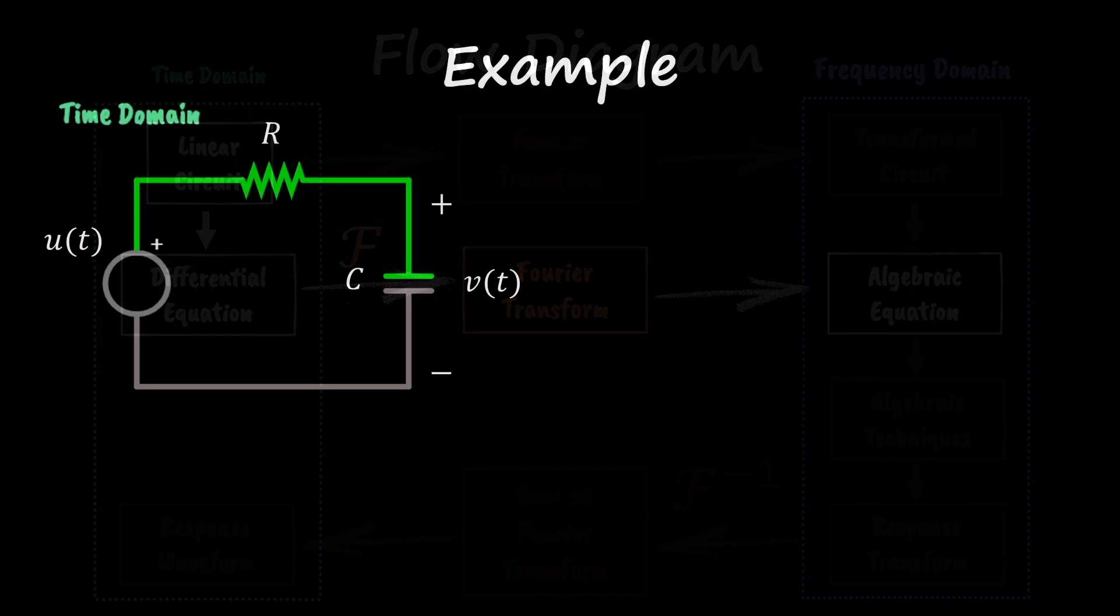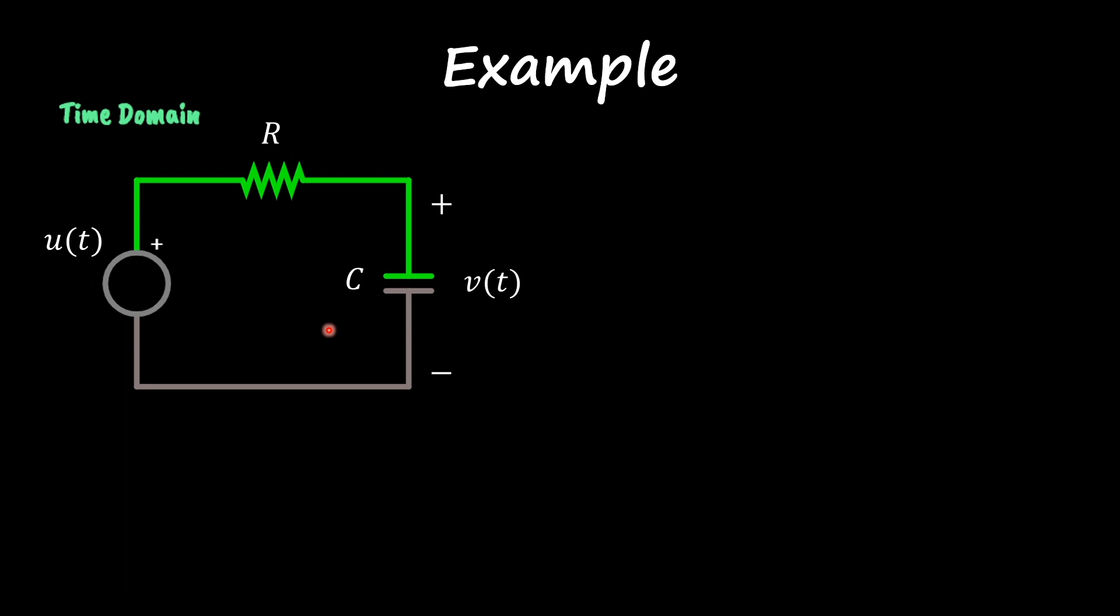Here I'm going to use the same circuit that we used before: a resistor connected in series with a capacitor and our step function. Notice that the current flowing in this circuit is the current flowing through the capacitor.